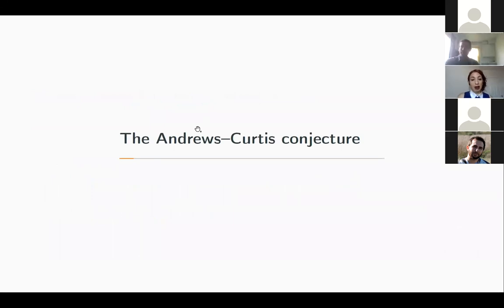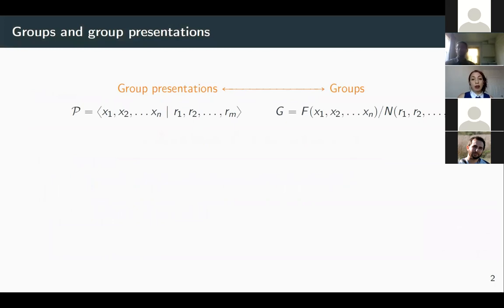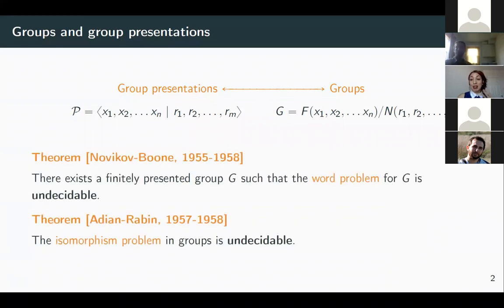The motivating problem is the Andrews-Curtis conjecture, though these ideas can be applied in other settings. The Andrews-Curtis conjecture is a problem in combinatorial group theory about understanding groups via group presentations. This problem is difficult since the word problem is undecidable. In particular, deciding if two presented groups are isomorphic cannot be solved algorithmically, and deciding if a presented group is trivial also cannot be solved with an algorithm.